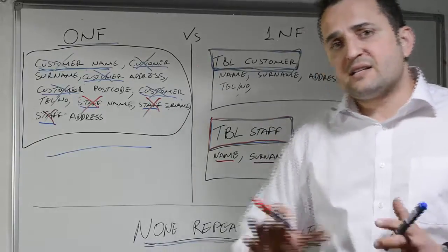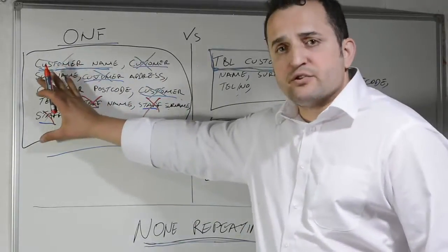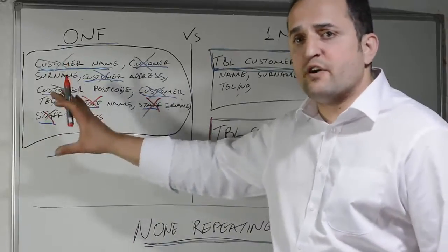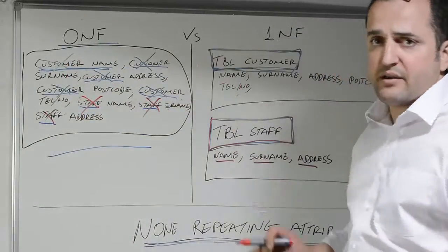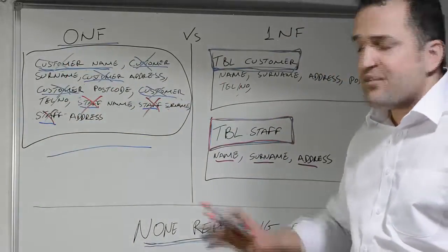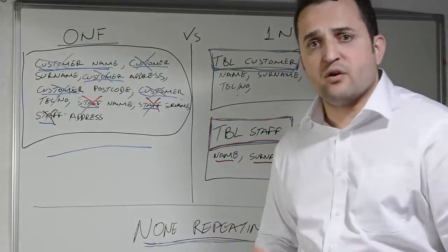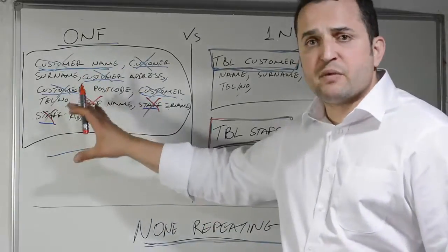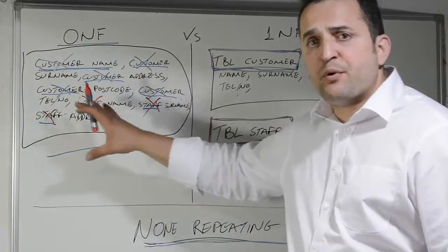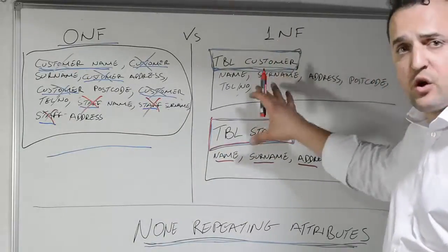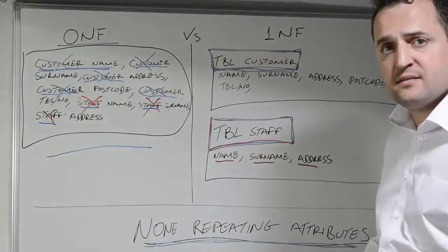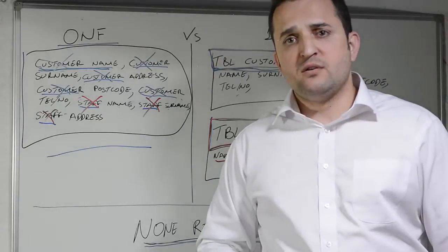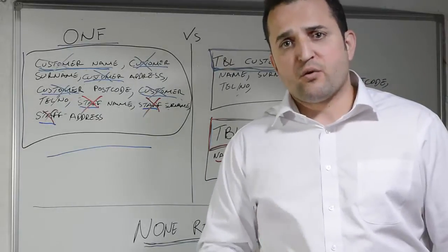It doesn't matter how many attributes you are going to have to normalize. This is the actual process you must follow: you remove the repeating attributes and you put them into their own entities. Hope this tutorial was helpful. Thank you for watching.